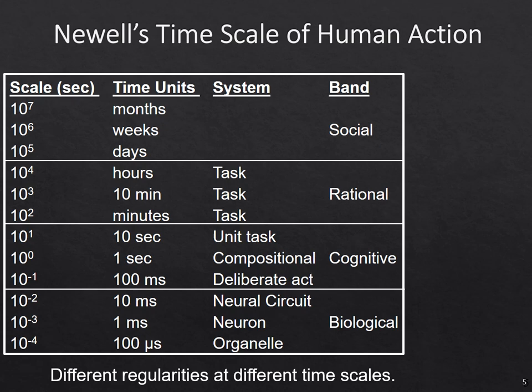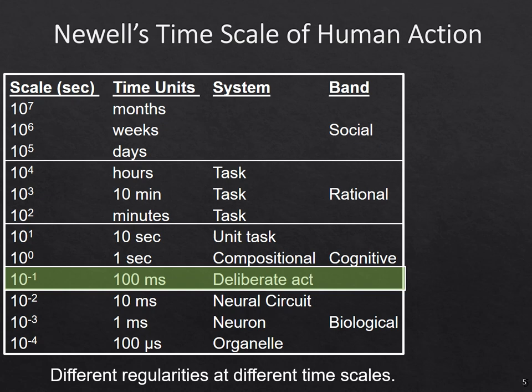Sometimes the level directly below will show through and have an impact, but often we can come up with regularities that we can study independently. One of the most important bands for cognitive architecture has been the deliberate act band, where we hypothesize that primitive acts and decisions are made in the cognitive system — somewhere around 100 milliseconds. In cognitive architectures that model human behavior, you often see this at 50 milliseconds, and we can talk about regularities and errors that people make at this level.